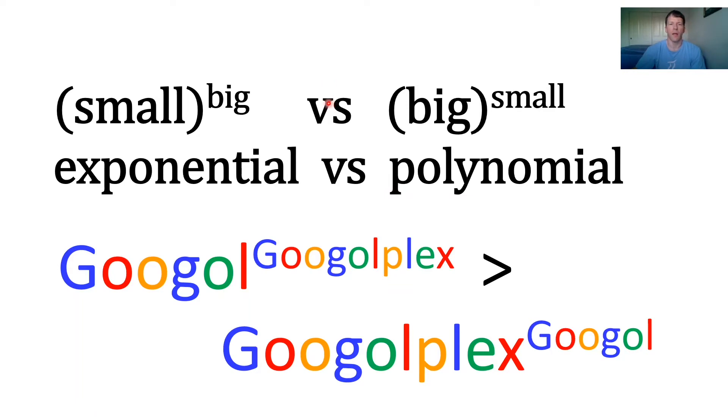So here's kind of the intuition about how to think about it. A small number raised to a big number versus a big number raised to a small number. So we're kind of transposing the base and the exponent. So you can think of this as like exponential in quotes because this is a big number. And this is more like polynomial. So in general, exponential functions are larger than polynomial functions. So we would predict that googol to the Googleplex, since a Googleplex is much bigger, would be greater than a Googleplex to the googol. And later on in the video, I will quantify when this is true and when it's not.